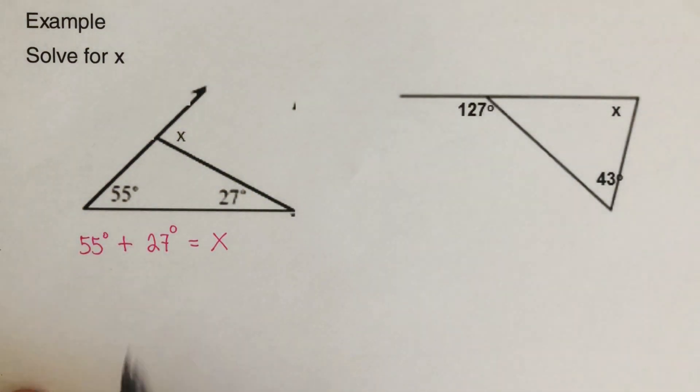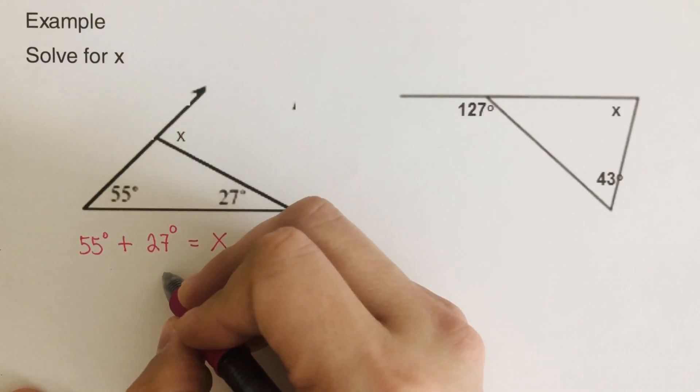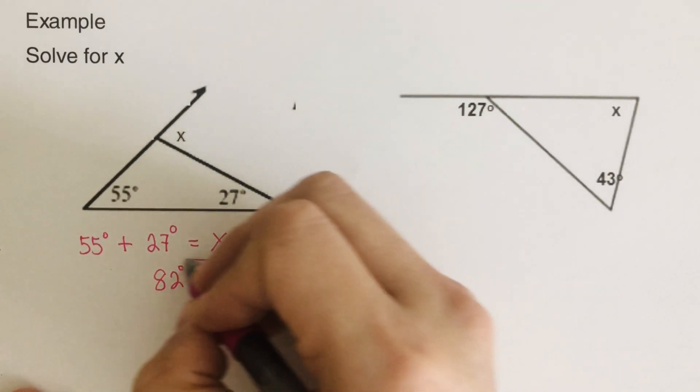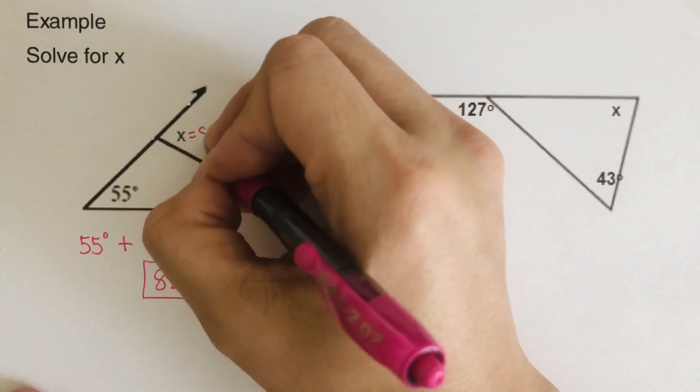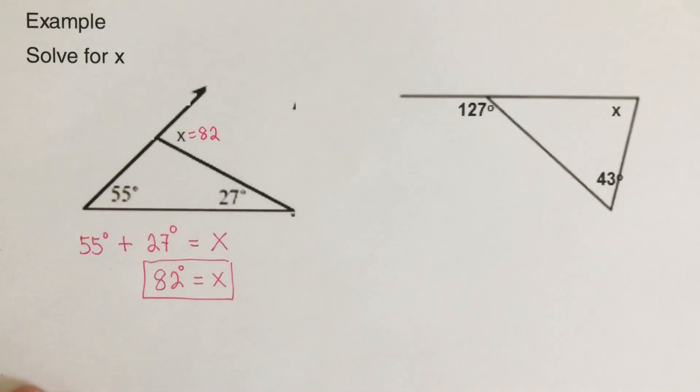So pretty much we add these two together. So 55 plus 27 is 82. So then our x is 82 degrees. So this is 82 right here. And that makes sense because if you add 55 plus 27 is 82.